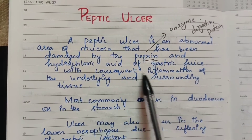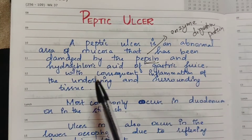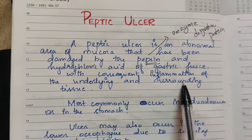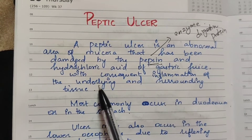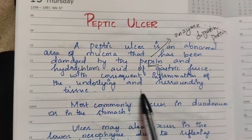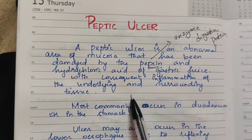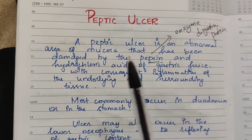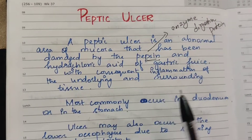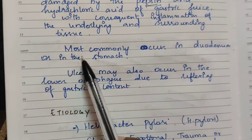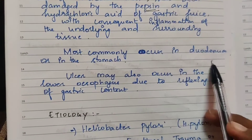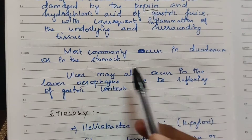With consequent inflammation of the underlying and surrounding tissue — that is the peptic ulcer. Most commonly occurs in the duodenum or stomach.